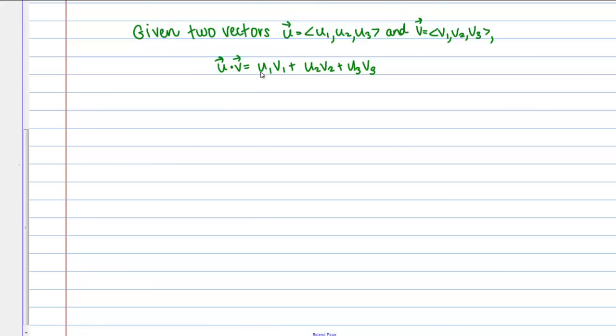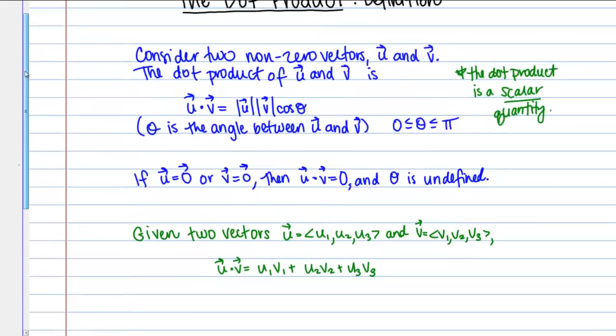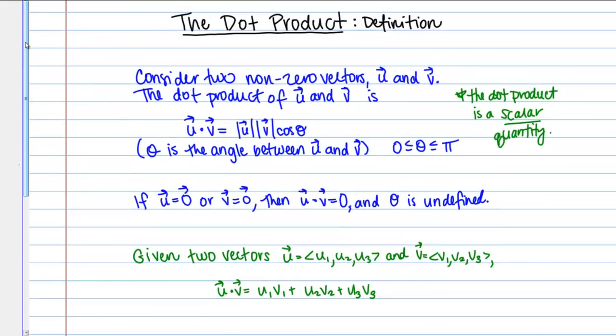Why is this useful? We've just presented here two different ways of computing the dot product. Why do we need these two different ways? Well, the first method here, u dot v equals magnitude u, magnitude v, cosine theta. Here you're using the magnitude of the vectors and the angle between them to compute the dot product.